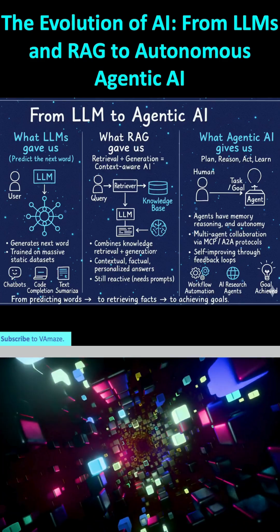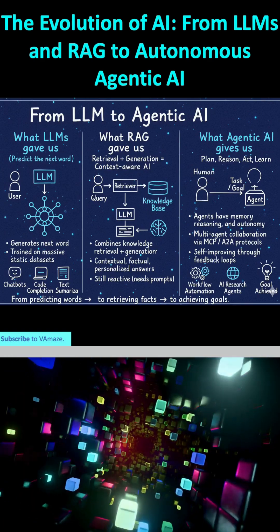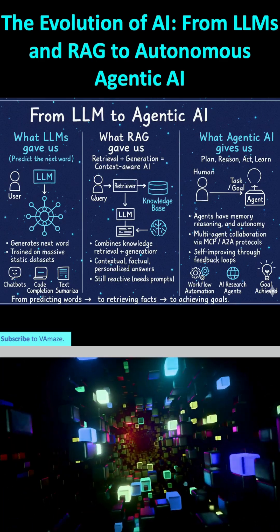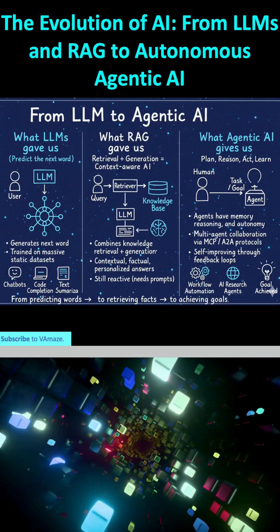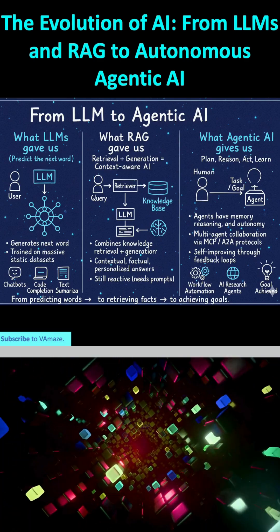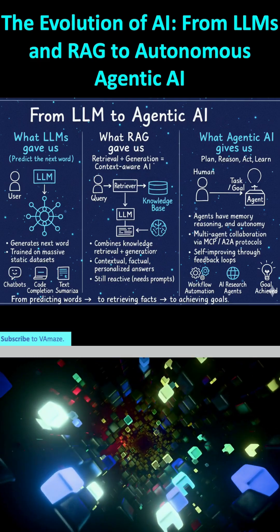Now, we're entering the era of what agentic AI gives us. This is the next frontier, where AI systems evolve into autonomous agents. Imagine an agent as an AI entity capable of mimicking human-like problem solving. Given a task or goal, an agentic AI can plan its steps, reason through challenges, act on its plans, and most crucially, learn from its outcomes.